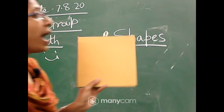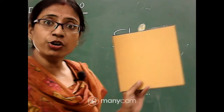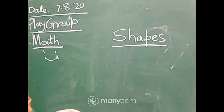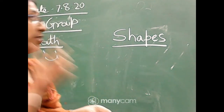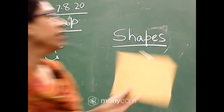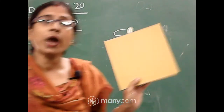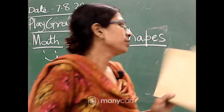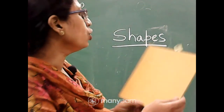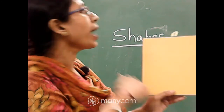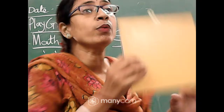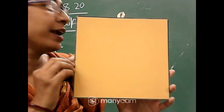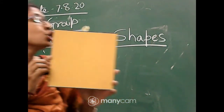You have a chess board, or a ludo board, or a carrom board — these are square in shape. So this shape is called — say with me — square. Square. Square.